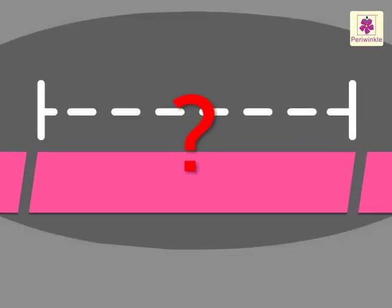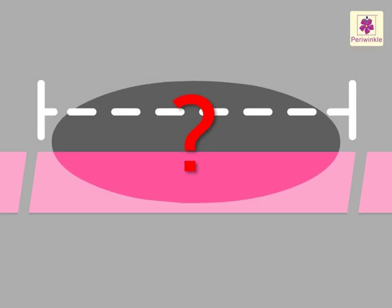A ribbon is 56 cm long. Look, we made 7 pieces. What is the length of each piece of the ribbon?